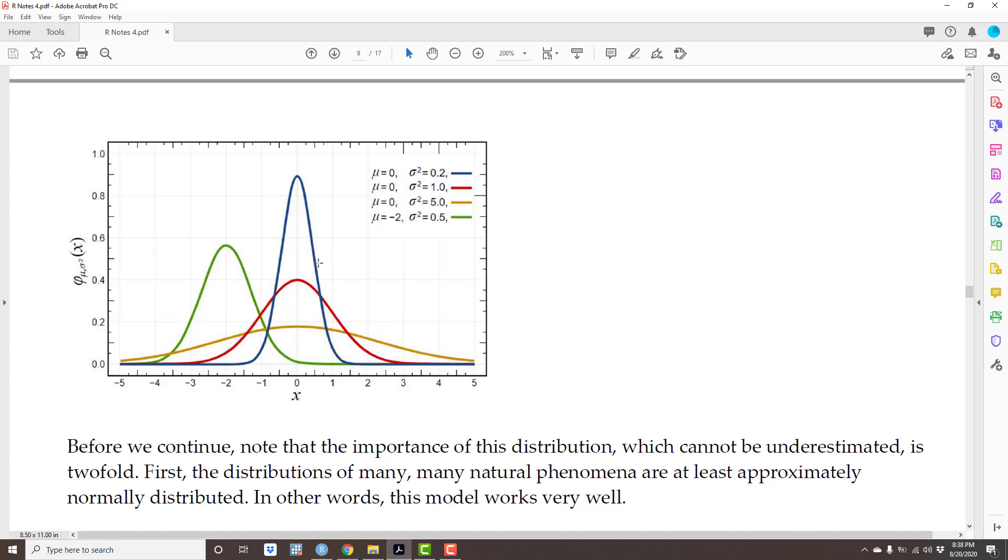Loosely speaking, it's where the data tend to be. For instance, compare the normal distribution where the average or the mean is zero, in the blue one, and the one where the mean is minus two, which is the green one. Notice that the data has this tendency to be around the mean.